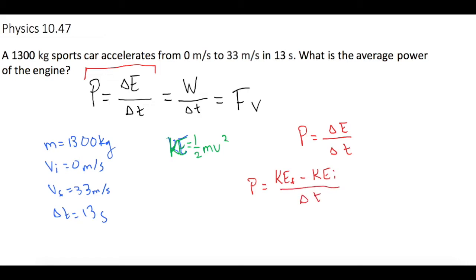In our initial kinetic energy, we had zero meters per second, so we don't have any kinetic energy to start with. So power is equal to our final kinetic energy over the change of time, which will give us the average power of the engine.